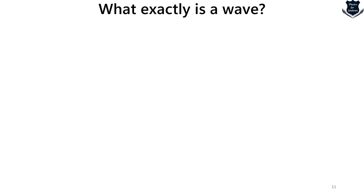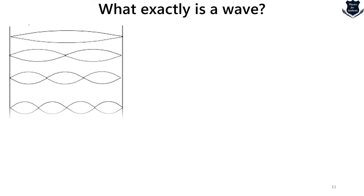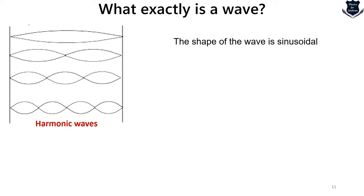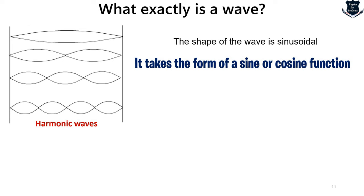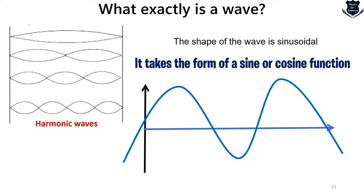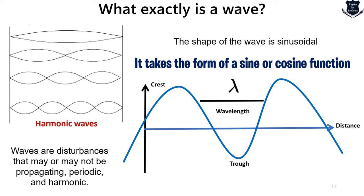Another type of wave is the harmonic wave. The shape of a harmonic wave is sinusoidal — it takes the form of sine and cosine functions. You can see plots of sinusoidal waves here. I will show you the wavelength, denoted by lambda, the crest at the top and the trough at the bottom, and the distance between them. These are disturbances that may or may not be propagating — periodic and harmonic.